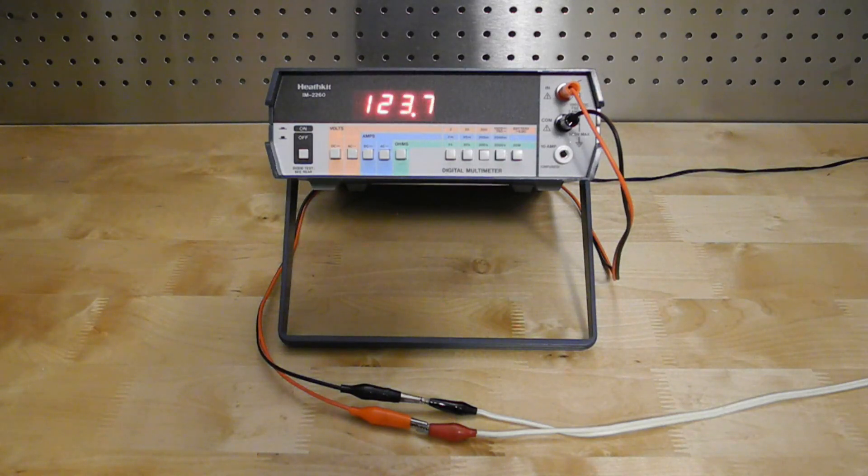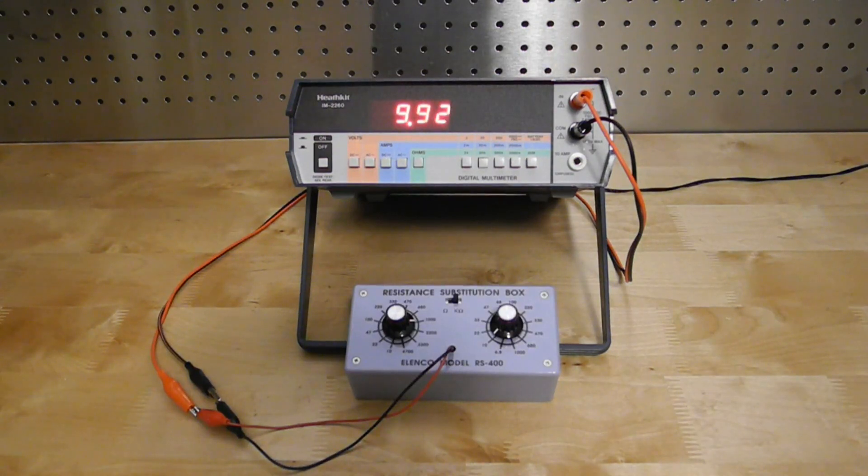Here's an AC voltage measurement of the AC power line. And now a resistance measurement using a resistance substitution box.